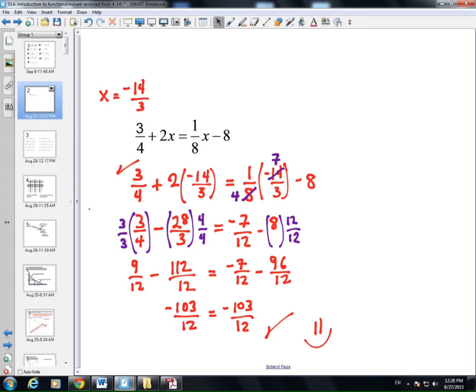And then here, we do the same thing. And the point is, when x is negative 14/3, the value on the left is equal to the value on the right. So, that's what the equation is asking for, is what value of x makes this a true statement? And the answer is negative 14/3.